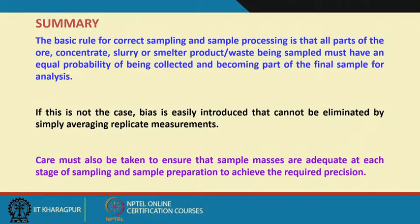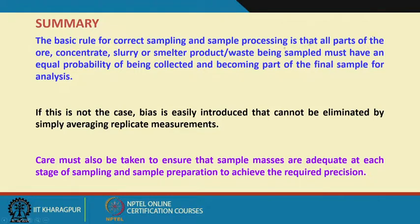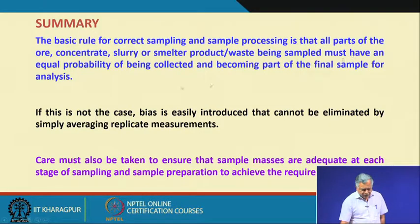To summarize: the basic rule for correct sampling and sample processing is that all parts of the ore, concentrate, slurry, or smelter product being sampled must have an equal probability of being collected and becoming part of the final sample for analysis.